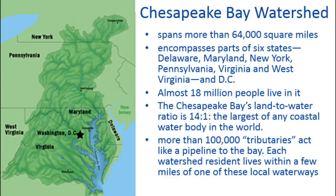A local example is our Chesapeake Bay watershed. Even though we're all part of one country, states make up a lot of their own laws with different policies. Our watershed spans a huge area — it incorporates six states and the District of Columbia, almost 18 million people. It's the largest in terms of land-to-water ratio of any watershed in the entire world, meaning all that land drains into a very small actual area of water, concentrating toxins from over a hundred thousand tributaries.